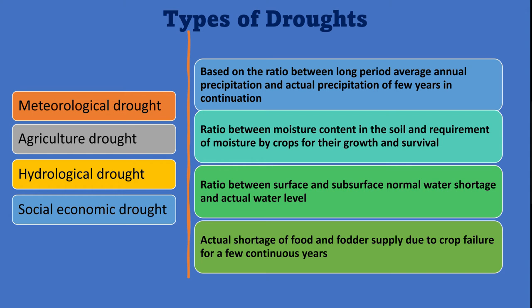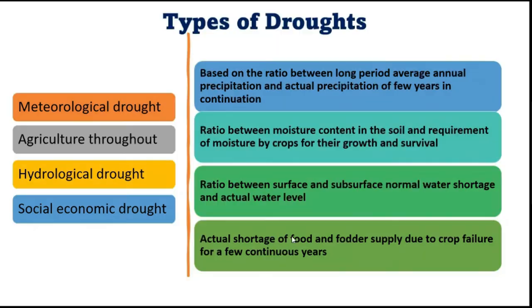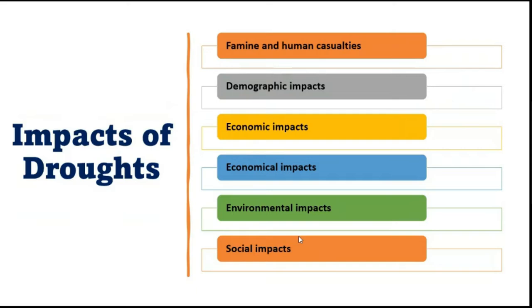In socio-economic drought conditions, consumers basically have to pay more for food and other water-sensitive products. These were the various types of drought. We will now discuss the impacts of drought. The first impact is famine and human casualties.